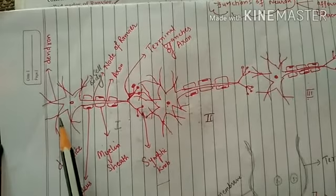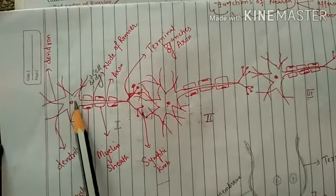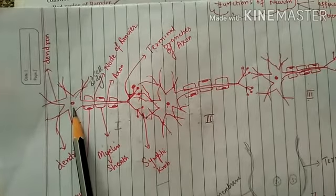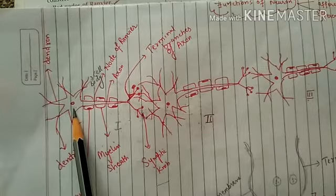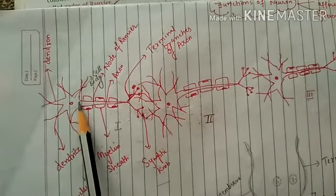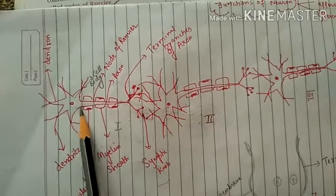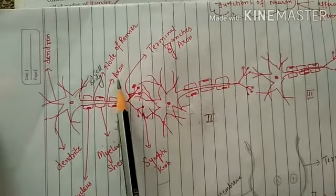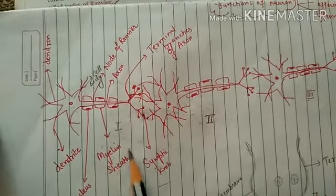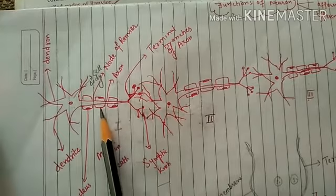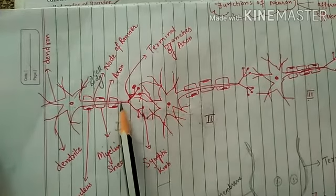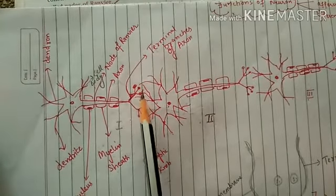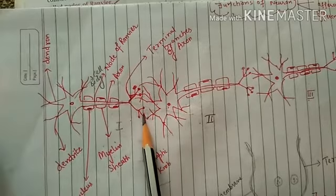In the structure of neuron, there is a dendrite, and then there is a dendron, and this dendron is connected with the main body that is known as cell body, or it is also known as cytone. The longest extension from this cell body was termed as axon, and this axon was covered with a sheath known as myelin sheath. This axon finally ends into terminal branches.